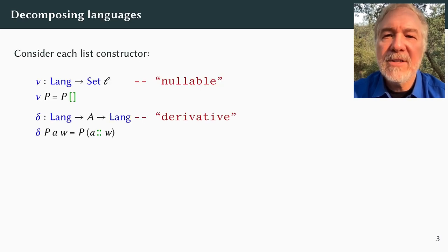Remembering that a language is a function from lists, let's consider each data constructor for lists, namely nil and cons. Nullability of a language is the proposition that the language contains the empty string. The derivative of a language P with respect to a leading character A is another language, consisting of the tails of those strings in P beginning with A.